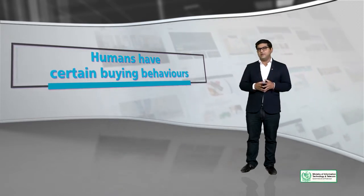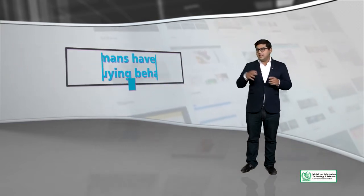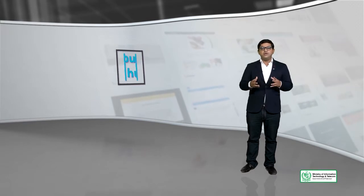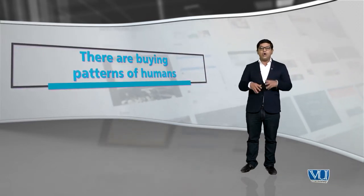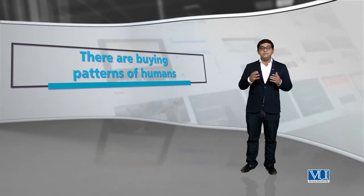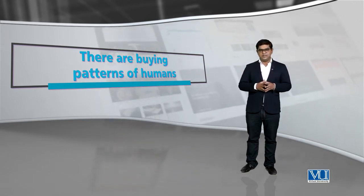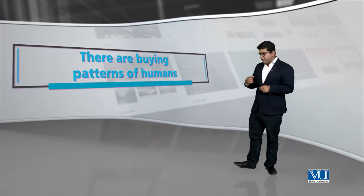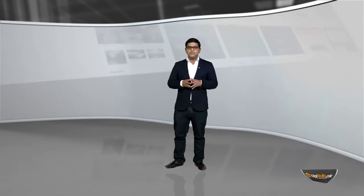Insaan ek tarah se kaam karta hain, aur insaan ko predict kar sakte hain. Jis tarah general commerce hoti hein, there are buying patterns of humans. Isi tarah online world mein bhi there are buying patterns of humans. So un buying patterns ko hum nei understand karna hai. Aur agar un buying patterns ko hum understand kar jayein, we would be able to maximize our product listing.